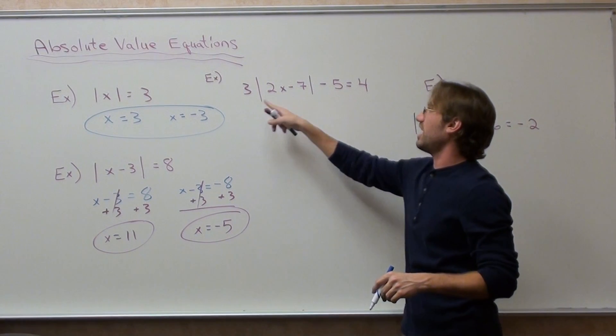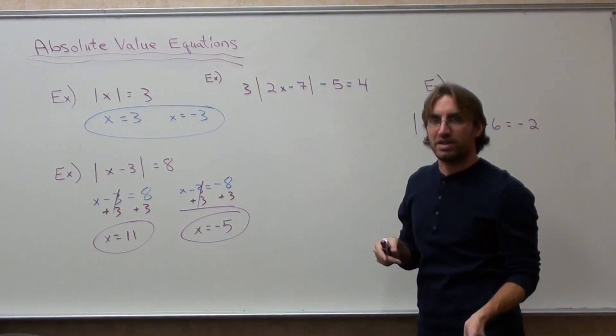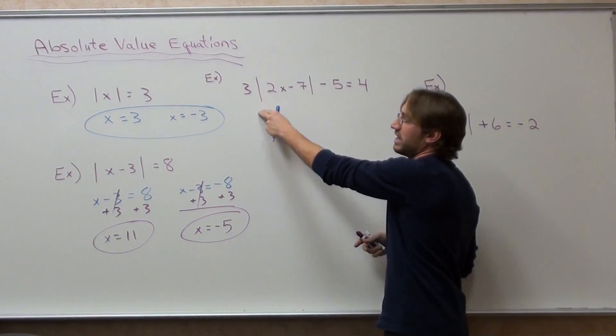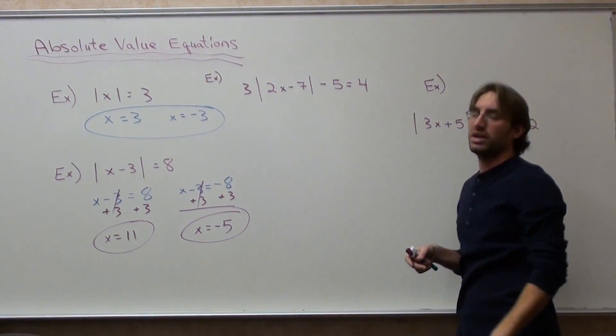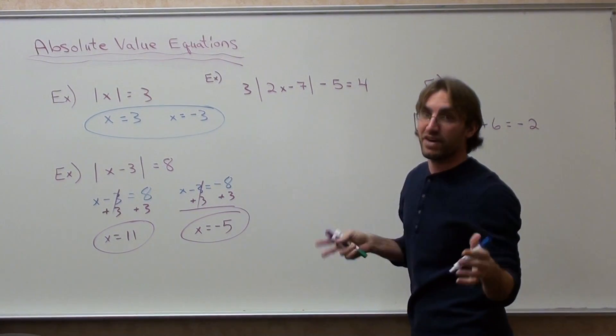So you have to get rid of this negative five and three, but you don't want to divide by three first, because if you divide by three, you divide it here, you divide it here, and you divide it here. Instead, what you want to do is just add five first.